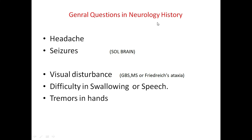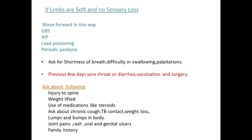Whenever a neurology case comes in exam, ask about headache and seizures — this will help rule out a space-occupying lesion in the brain. Then ask about visual disturbances, which may occur in GBS, multiple sclerosis, or Friedreich's ataxia. Then ask about swallowing or speech difficulties and tremors in the hands.